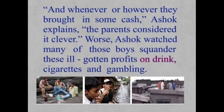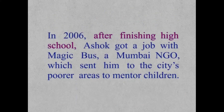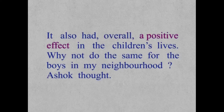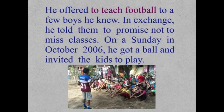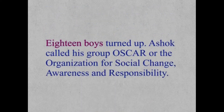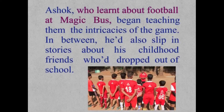They would steal or pick up fish that had fallen from baskets to sell and make easy money, and whenever they brought in some cash, Ashok explains, the parents considered it clever. Worse, Ashok watched many of those boys squander these ill-gotten profits on drink, cigarettes, and gambling. In 2006, after finishing high school, Ashok got a job with Magic Bus, a Mumbai NGO which sent him to the city's poorer areas to mentor children. That's how he realized that team sports, particularly football, forged friendships and called for discipline. He offered to teach football to a few boys, and in October 2006 he got a ball and invited the kids to play — eighteen boys turned up. Ashok called his group OSCAR: the Organization for Social Change, Awareness and Responsibility.